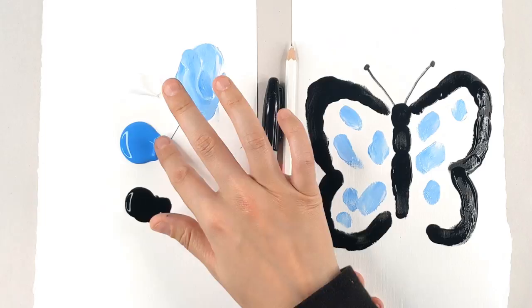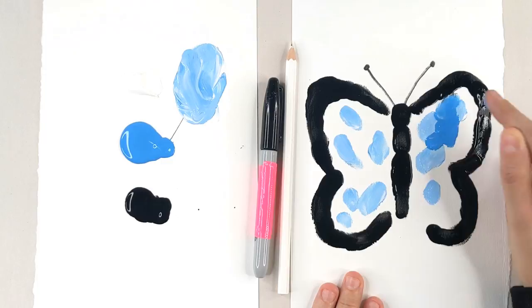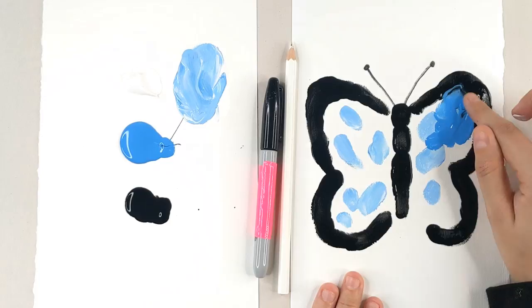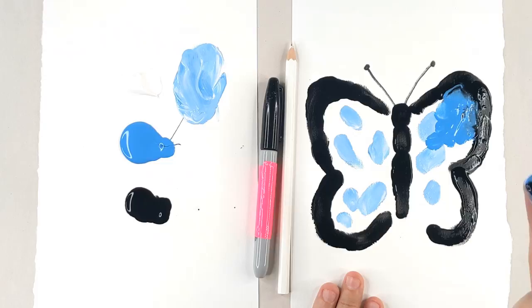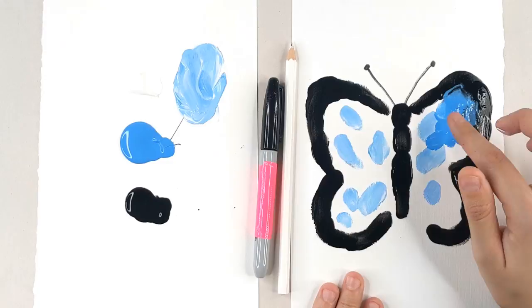So now I'm going to go in with the darker blue and we're just going to blend those together. It does not have to be perfect. If we get a little bit of black, that's fine. We just want to make sure that we don't blend the black too much into the center. If you start getting a little bit too much black on your finger, wipe it off and start again. Get a clean finger and keep going back in.